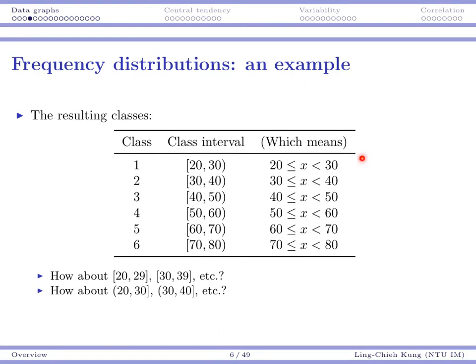With that, I'm going to create six classes. The first one starts from 20 and goes to 30, the second from 30 to 40, and so on. Each notation here is a bracket with a left square bracket and right parenthesis, which means we include the lower bound but exclude the upper bound.